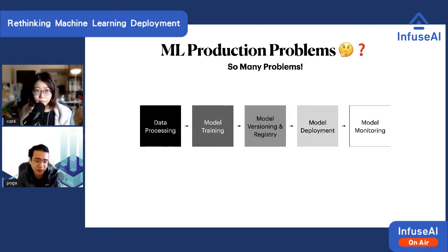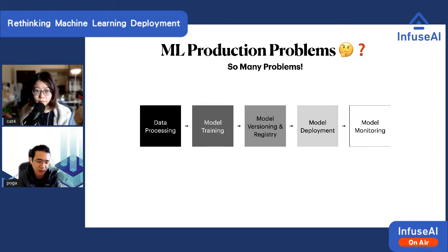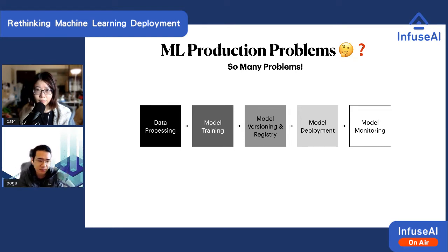This year, everyone is familiar with the process where we as developers started putting machine learning services into production at a really rapid pace. The machine learning production service includes a lot of steps — it's basically a really complex, interdependent, multi-stage pipeline for the whole process.